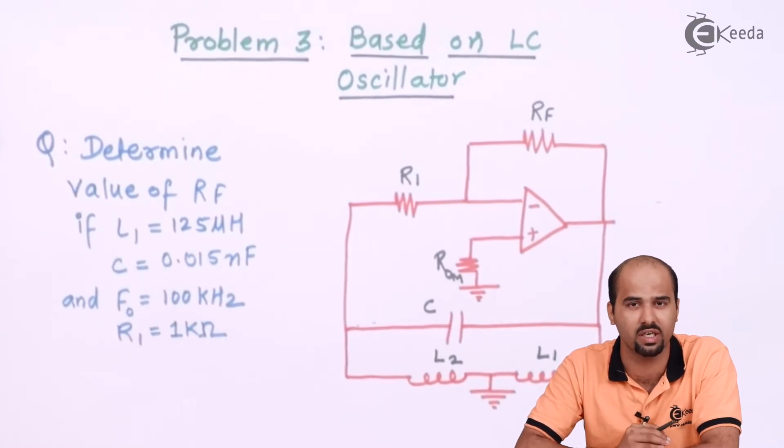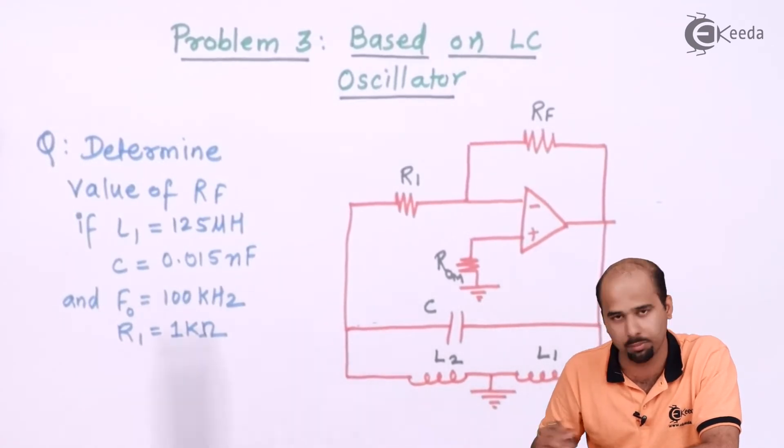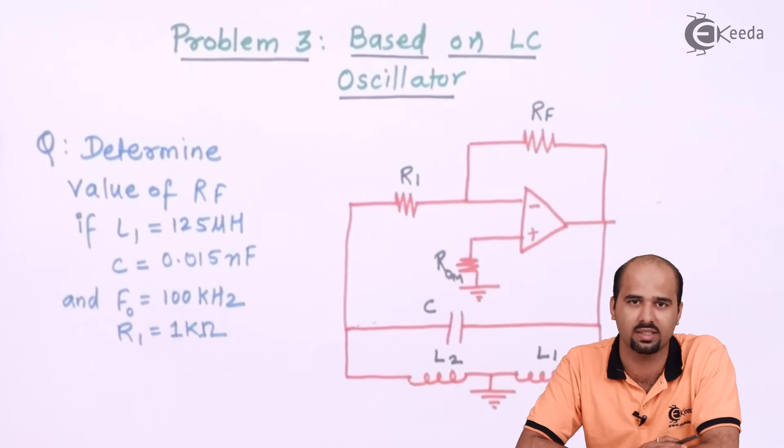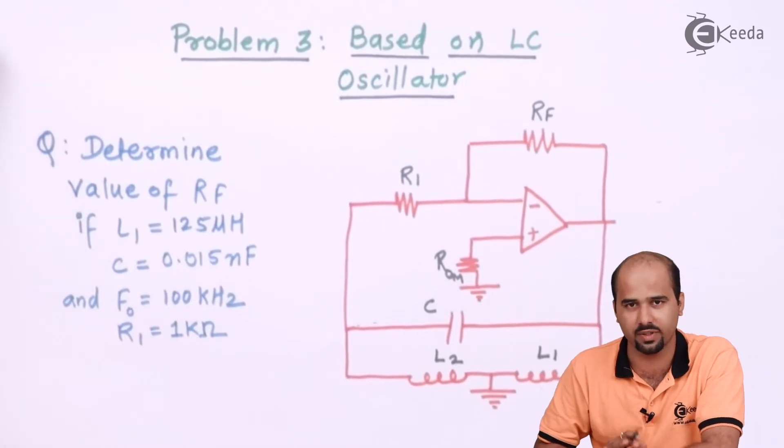whether it is Colpitts, whether it is Hartley, whether it is Clapp, whether it is crystal, no, not mentioned. So you have to identify depending on the feedback components. You can say whether it's Hartley, Colpitts, Clapp and so on. Let's understand, we'll decide it further.